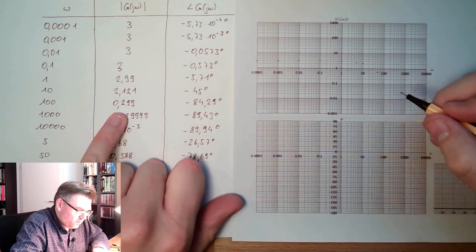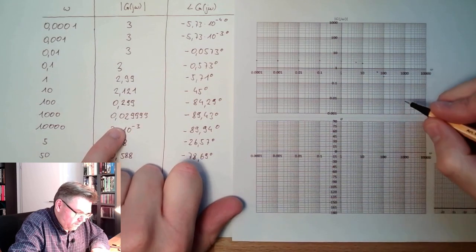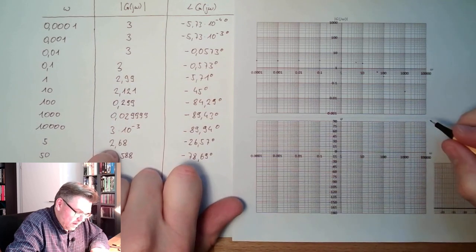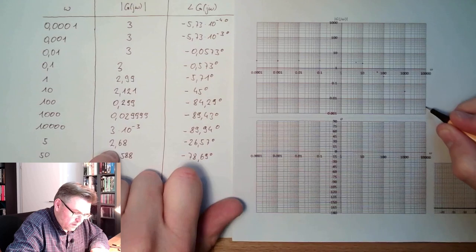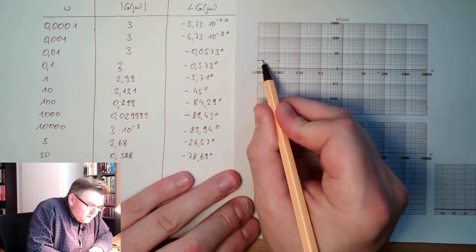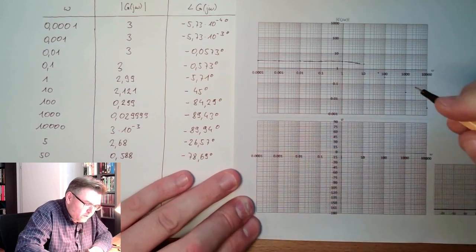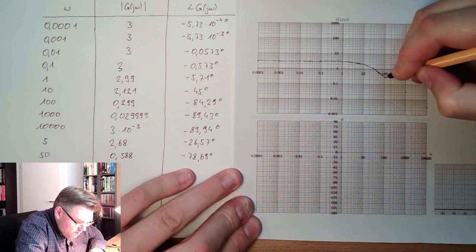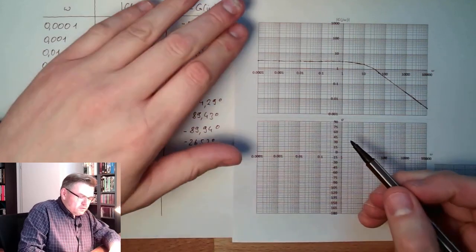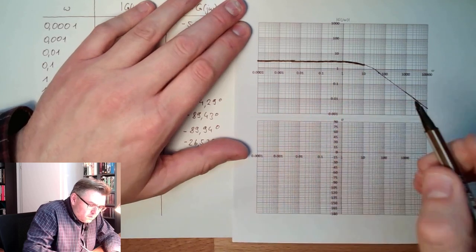At 100, I have 0.3. At 1000, I have 0.03. And at 10,000, I'm at 0.003. So this actually is what I've calculated. Here we're dropping, and here we're also dropping. Remember, this one looks like a PT1 element.